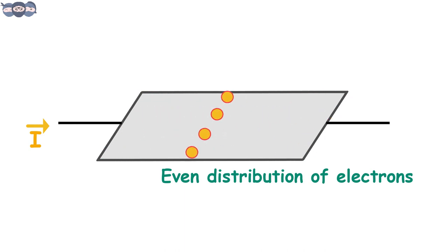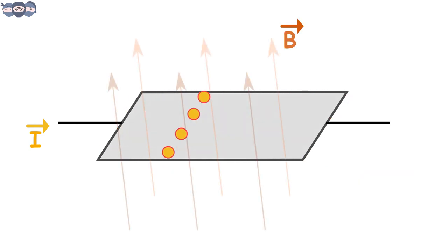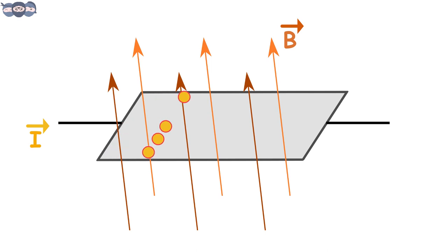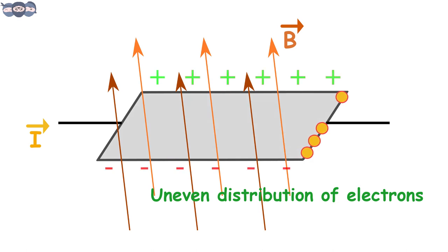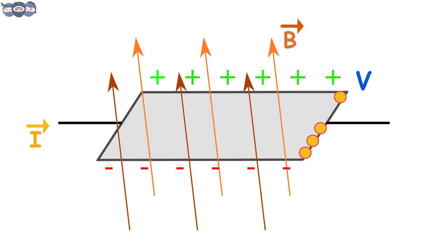Now, when this metal sheet is subjected to the magnetic field, the density of electrons in the metal sheet changes. As seen in the video, we observe that electrons get distributed unevenly. Due to this distribution, voltage gets generated across the metal sheet and is perpendicular to both the magnetic field and current.